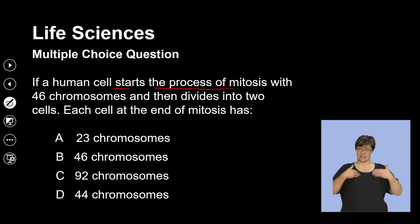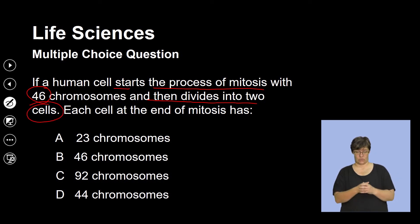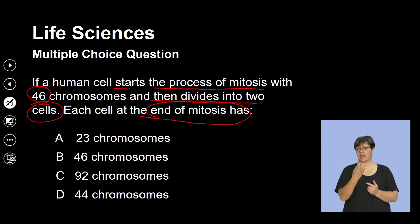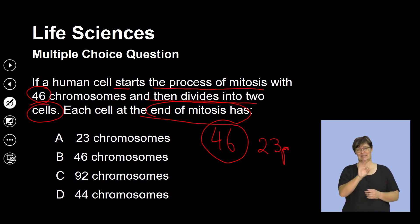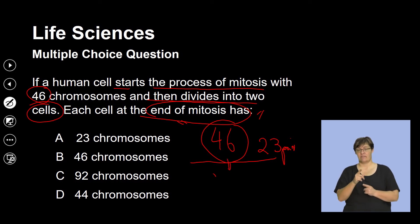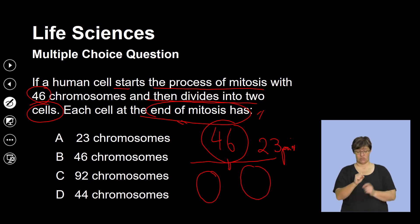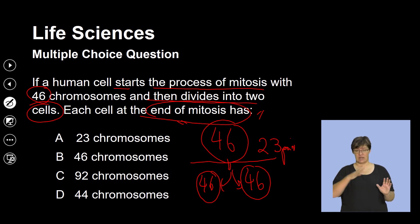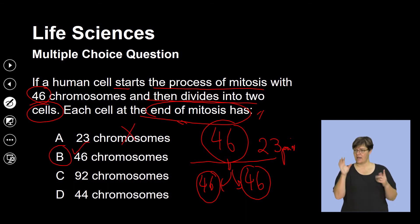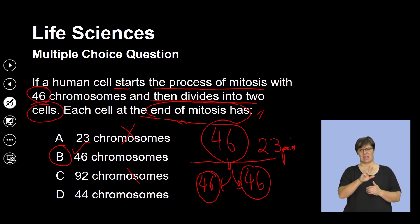Question three: if a human cell starts mitosis with 46 chromosomes and divides into two cells, how many chromosomes does each cell have at the end? Every cell in the body has 46 chromosomes, or 23 pairs, and a somatic cell has 46 chromosomes. When a cell divides by mitosis, each of the cells should have the same number of chromosomes — we refer to this as the cells being genetically identical. The correct answer is 46 chromosomes.